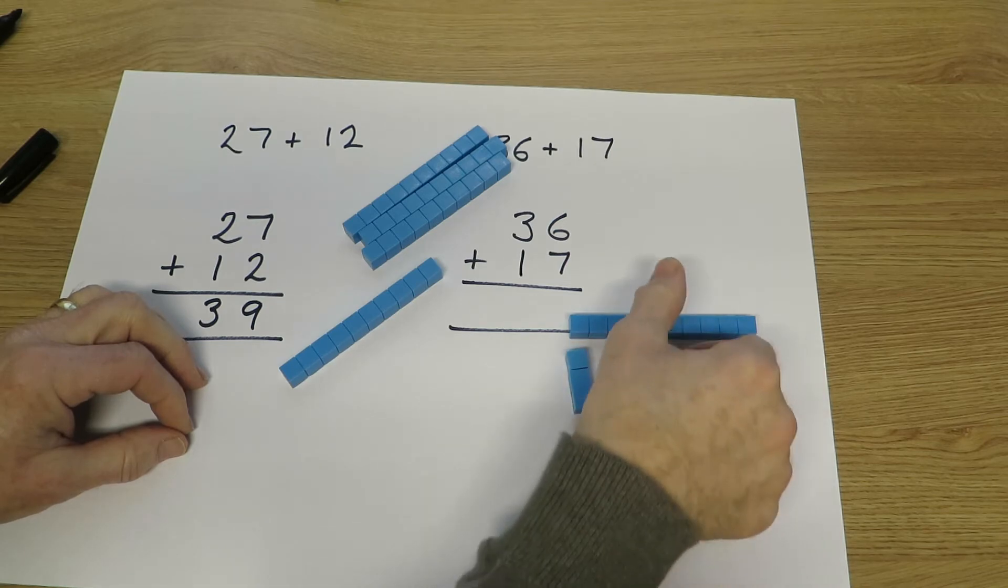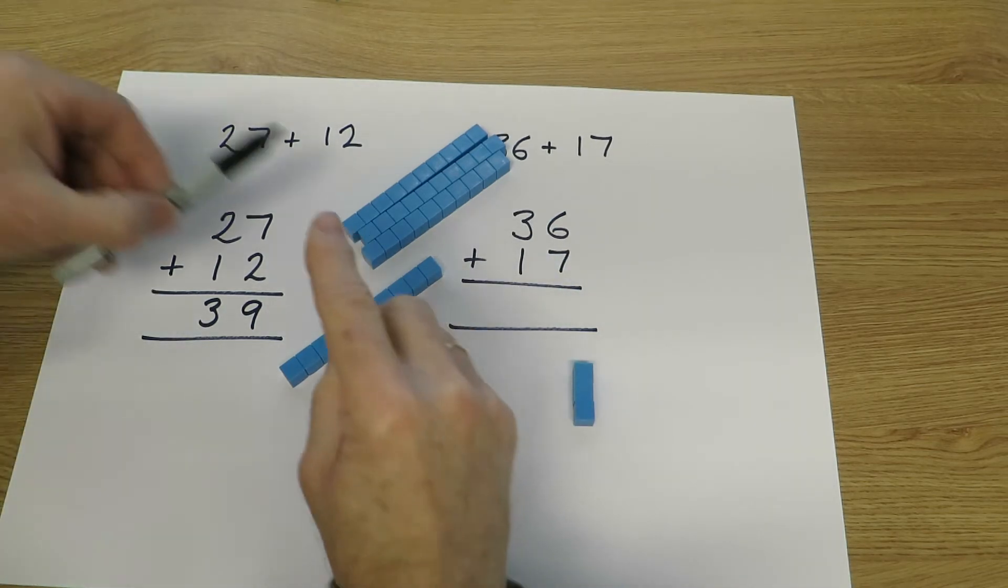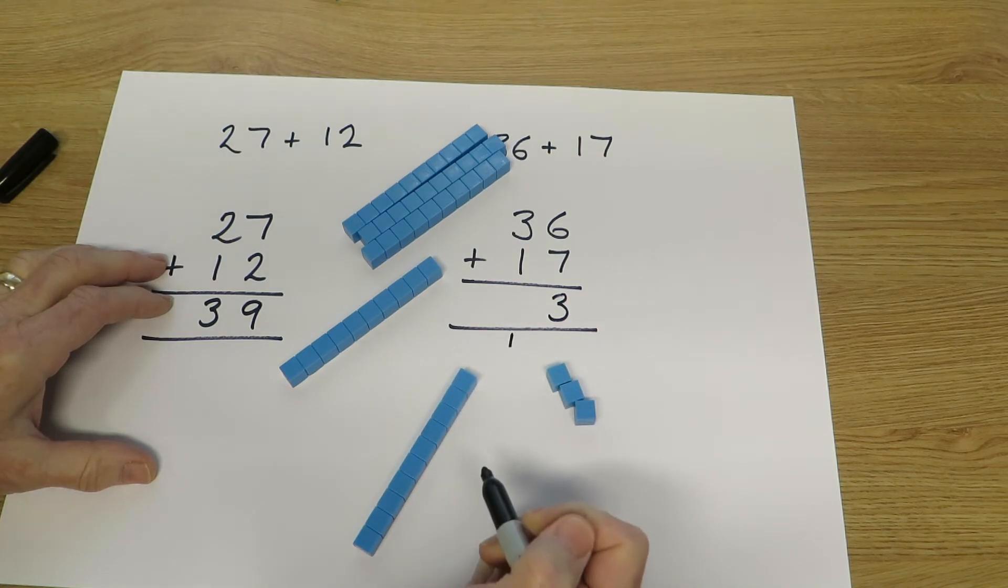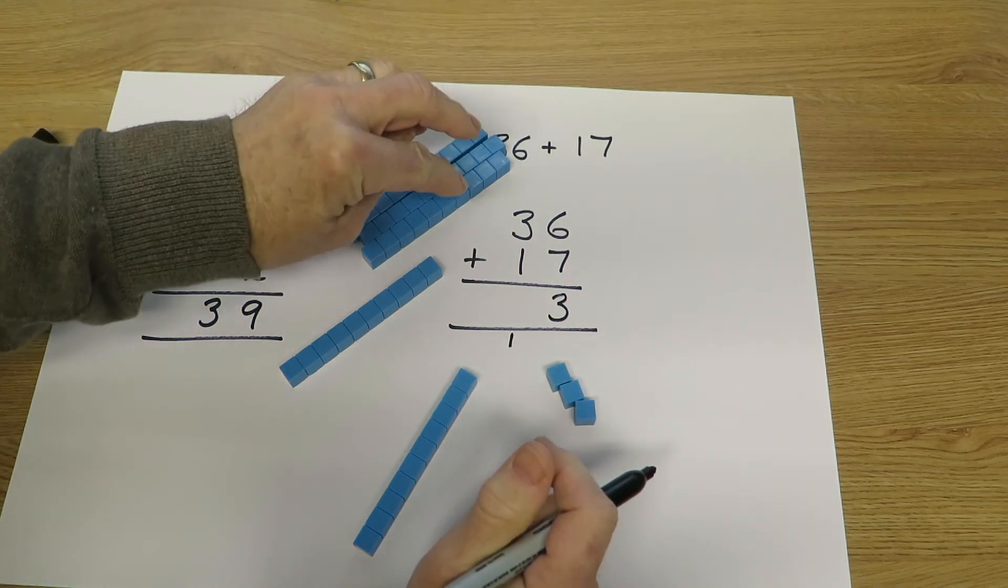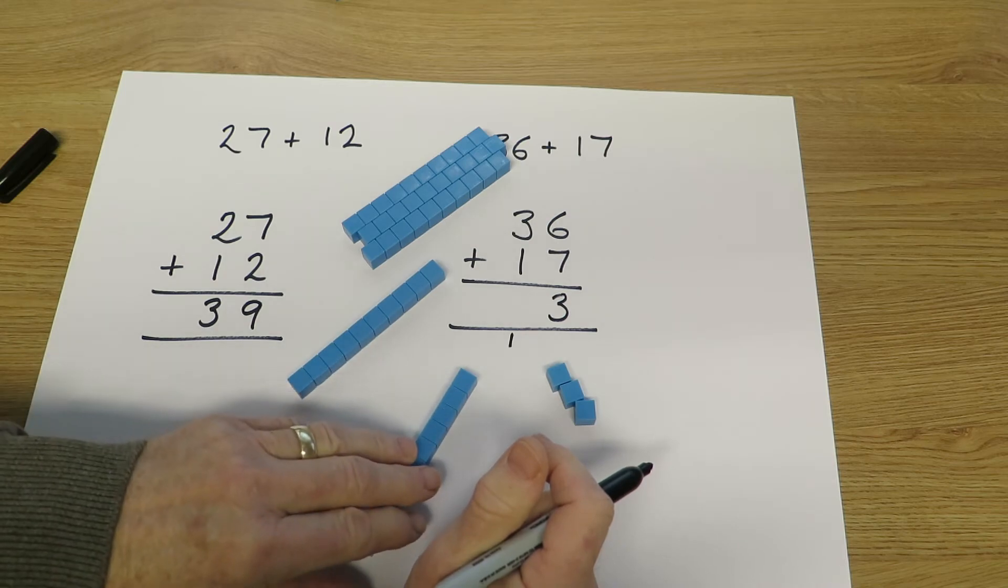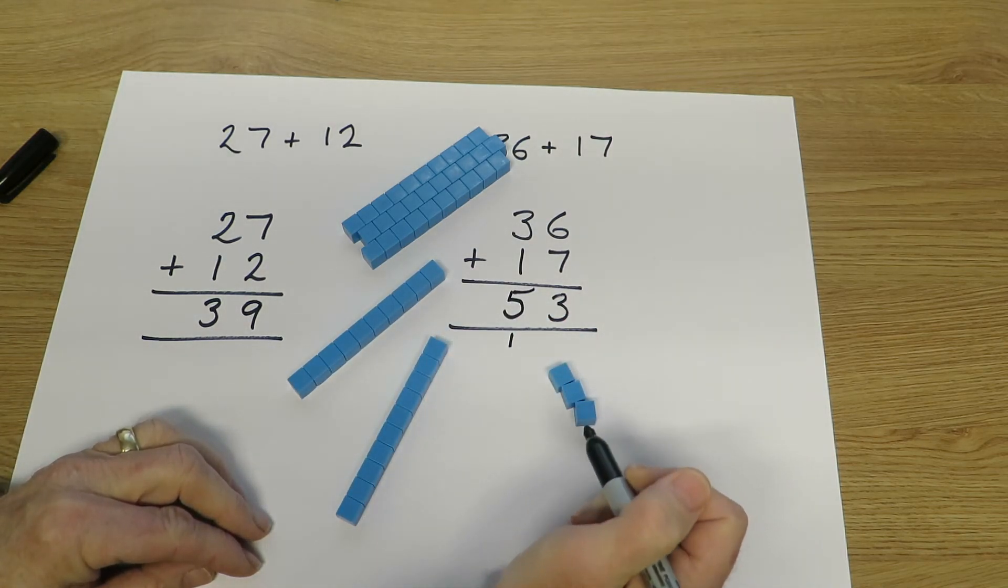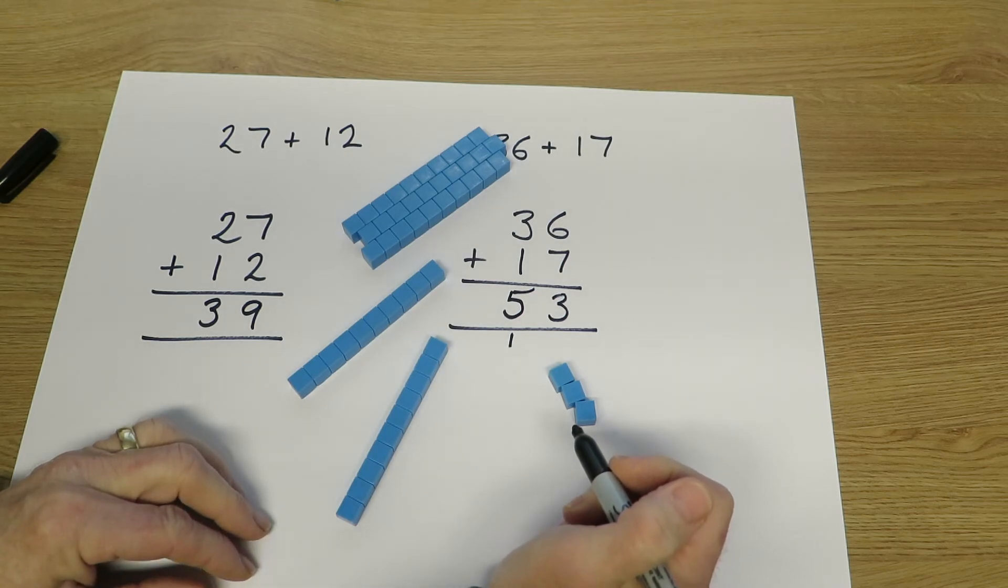So now we've got 3 units but we've got an extra 10, so we show the 3 units in the units column and the extra 10 in the tens column, adding the tens: 3 tens, 4 tens, 5 tens. So the final answer, 36 add 17, is 53.